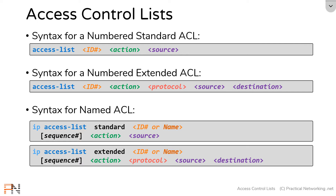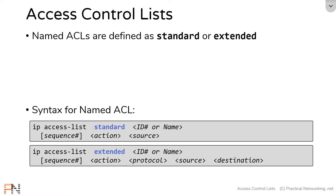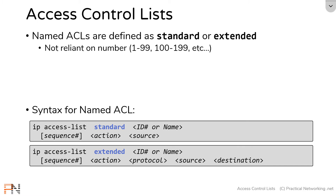There are actually only two differences: that word right in there, and the sequence number right there. When you create your named access list, you explicitly define them as either standard or extended. Those concepts of standard and extended access lists still apply, but in a named access list they're not reliant upon the number you choose as the ID. In numbered access lists, 1–99 is standard and 100–199 is extended — that's not the case with named access list syntax. You simply define the ACL as either standard or extended directly in the command itself.